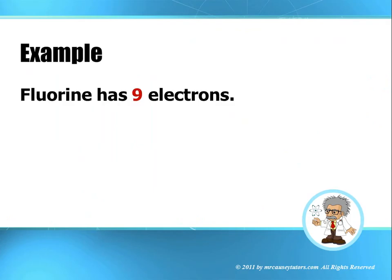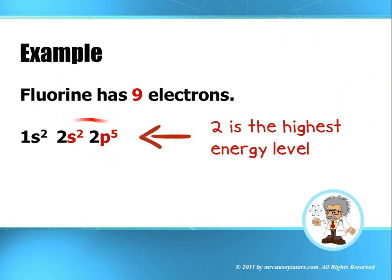An example of this would be fluorine has nine electrons. So 1s2, 2s2 and 2p5. The second energy level is the highest energy level. And 2 plus 5 is 7. So we have 7 valence electrons.